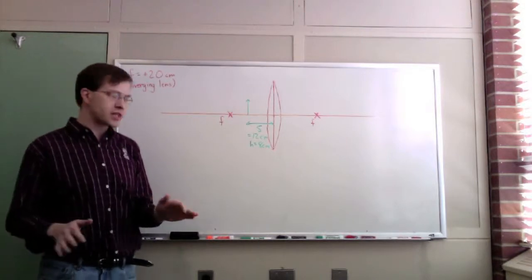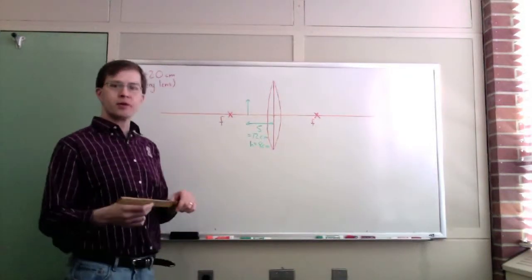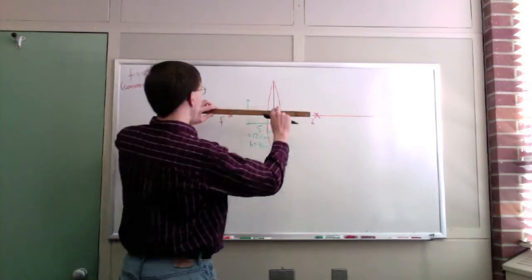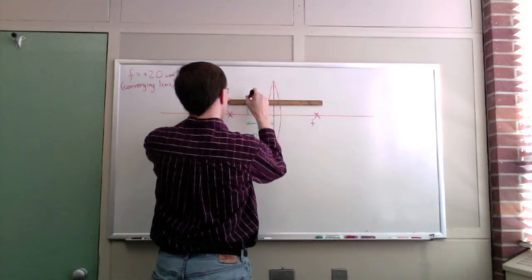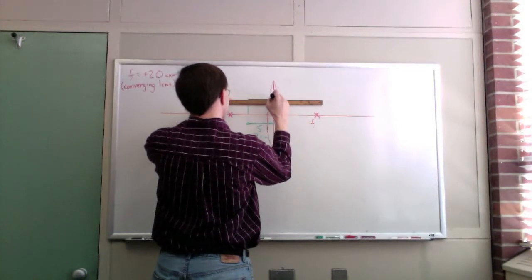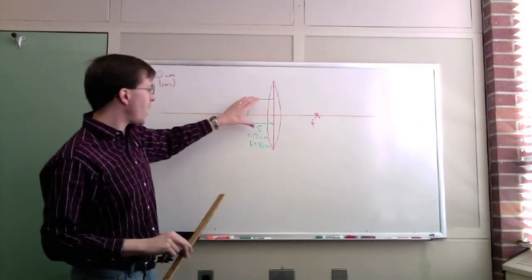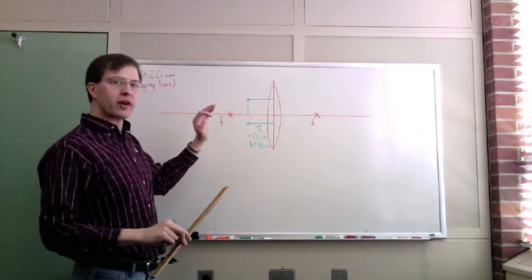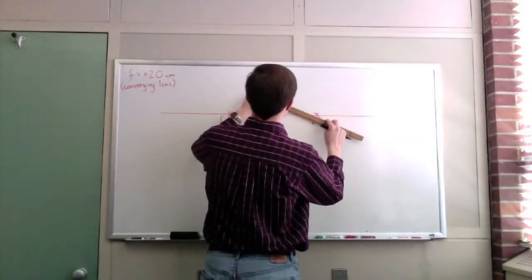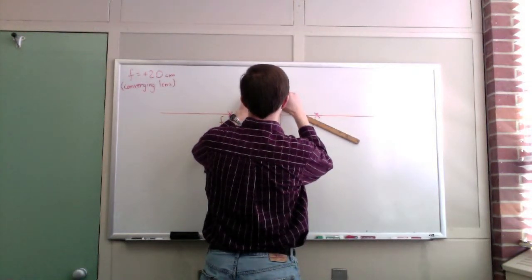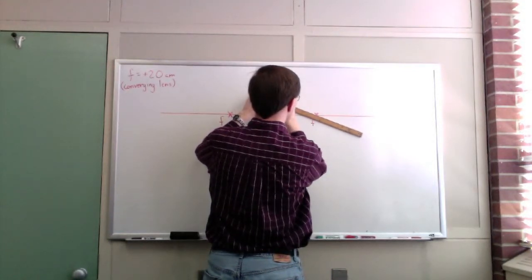We have to follow the same three principal rays. Principal ray number one is the same as always — I'm going to take it straight over, parallel to the axis, until it reaches the infinitely thin lens. Remember, when a ray parallel to the axis reaches a converging lens, the lens immediately redirects that ray to go through the focal point on the other side. So this ray will then go straight through the focal point.